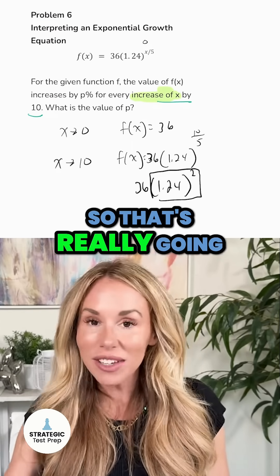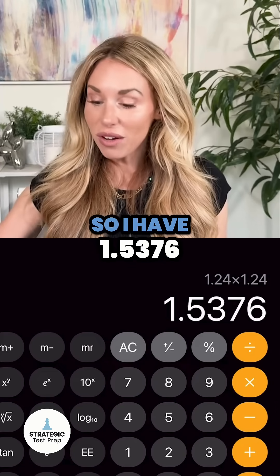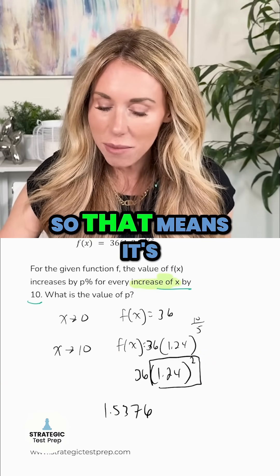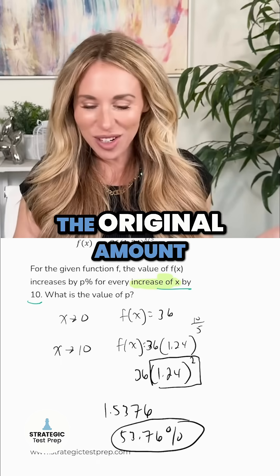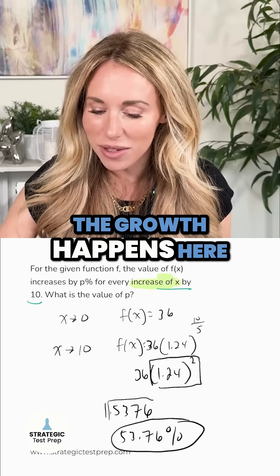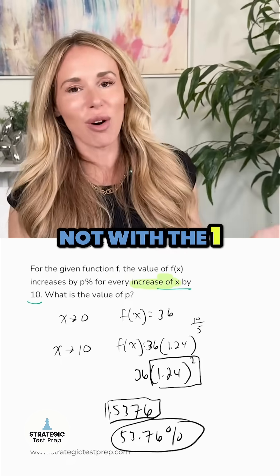So I have 1.5376, so that means it's 53.76 percent bigger than the original amount. Because remember, the growth happens here with the decimal, not with the one. The one just preserves the original value of 36.